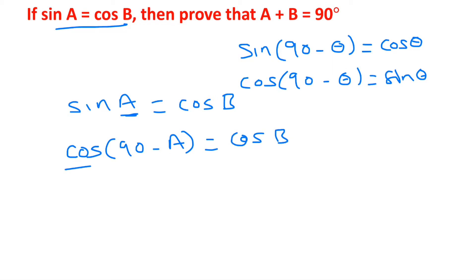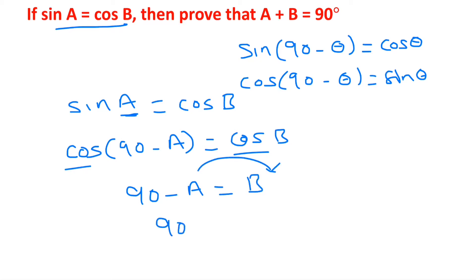If we eliminate cos on both sides, we get 90 minus A equals B. Transposing A to the other side gives us 90 equals A plus B, therefore A plus B equals 90 degrees.